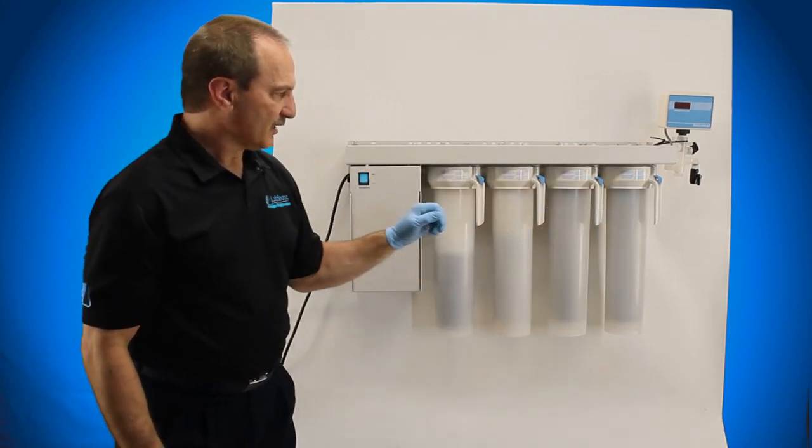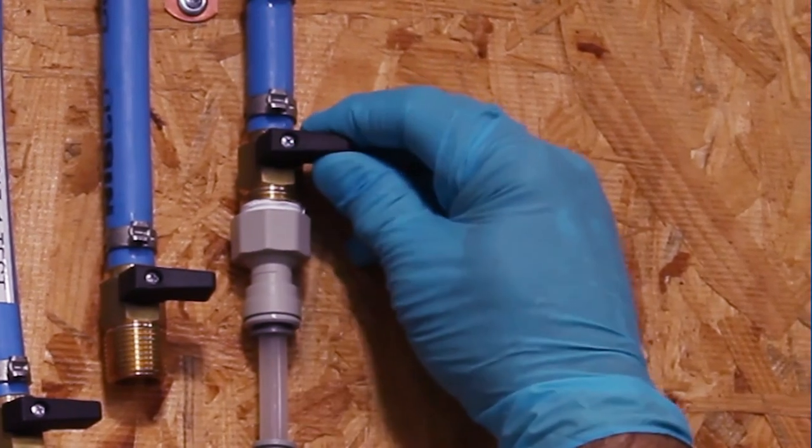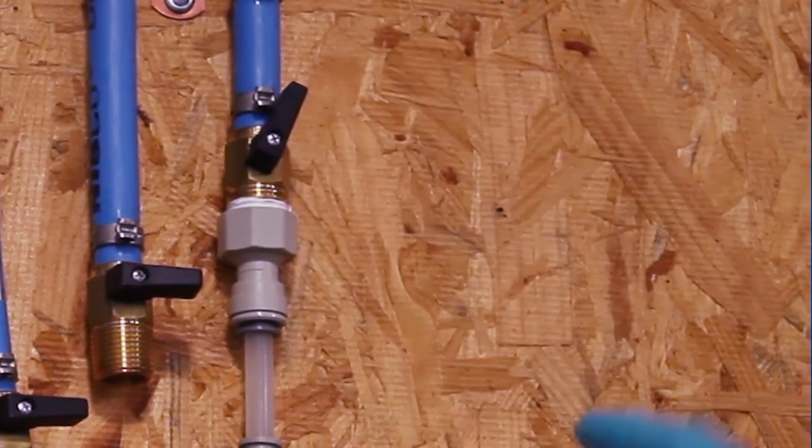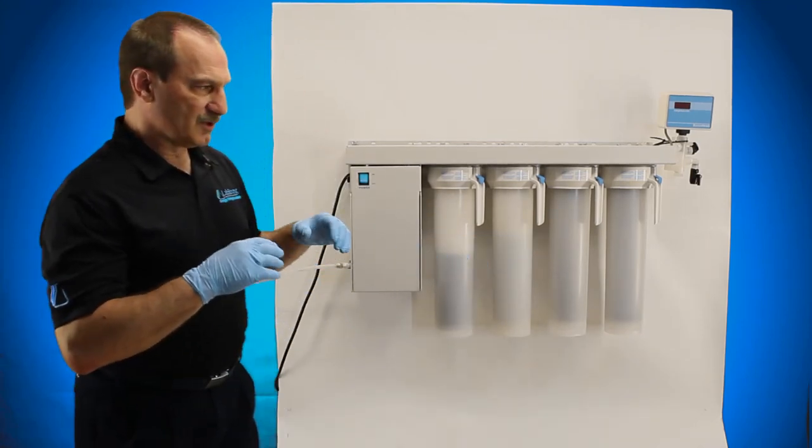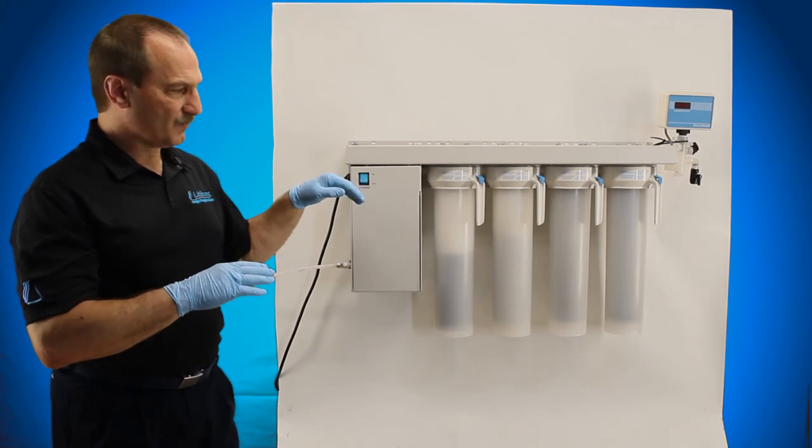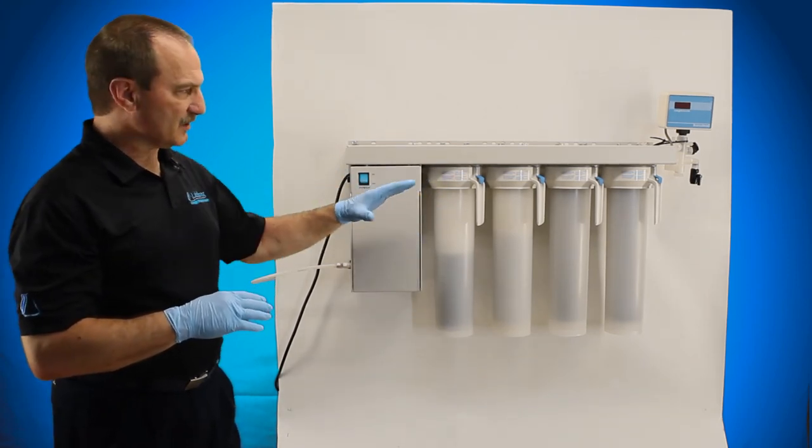I usually suggest the incoming valve opening it up about half way, because you don't want a lot of pressure pushing it through to get that air out. Sometimes you get air trapped in some of the cartridges, and just a slow flow of water through will help get that air out and not damage anything.